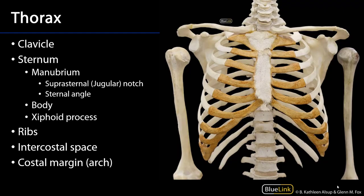The thorax is a bony cage that surrounds the thoracic cavity. The osteological elements include 12 thoracic vertebrae — T1 is below that line and obscured by the remainder of the skeleton, T12 is there — and these vertebrae articulate with 12 pairs of ribs. The ribs articulate with the sternum via costal cartilages, which is hyaline cartilage, except for the last two ribs, which we call floating ribs.